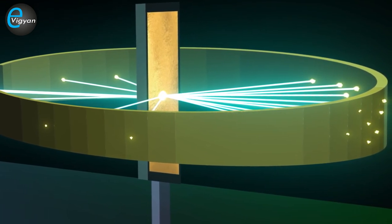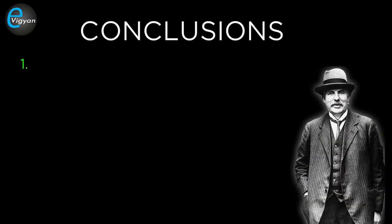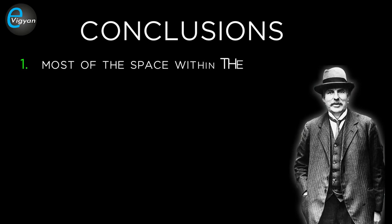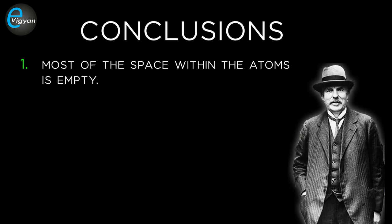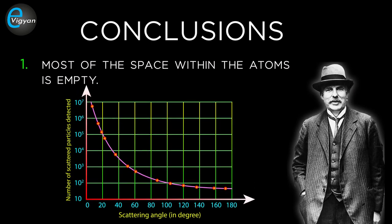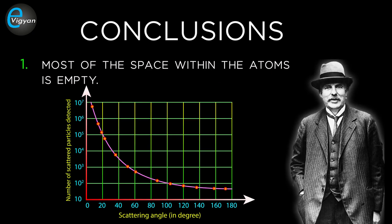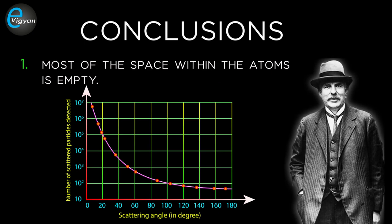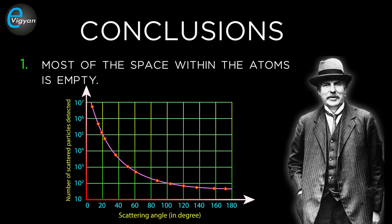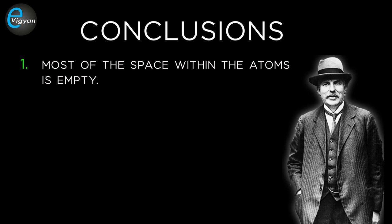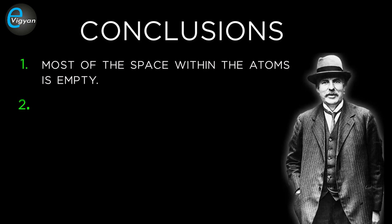From the results of that experiment, Rutherford made some conclusions. His first conclusion was that most of the space within atoms is empty. He said this because more than 98% of alpha particles passed through the gold foil without any deflection, meaning those alpha particles didn't find anything to interact with, and we can easily say that those spaces within atoms are empty.